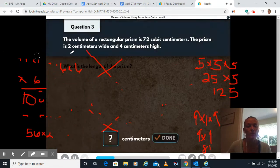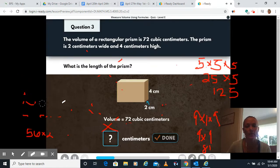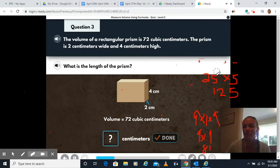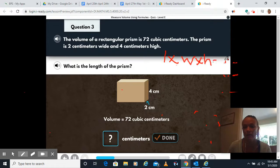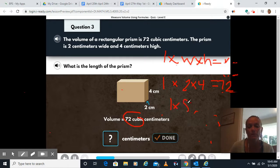All right, for our next one, it says the volume of a rectangular prism is 72 cubic centimeters. The prism is two centimeters wide and four centimeters high, what is the length? So they gave us some of the measurements, and they're trying to figure out the missing one, which is the length. So remember with our formula, length times width times height is equal to our volume. They're already telling us the volume is 72. They told us the width and the height. So we have two times four, we don't know the length, that's what we're trying to figure out.